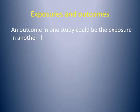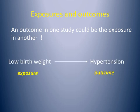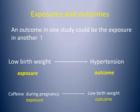It is also necessary to understand that an outcome in one case could be the exposure in another. For example, low birth weight could be associated with increased risk of hypertension. But we have seen in the previous example that low birth weight is considered an outcome of caffeine intake during pregnancy. So, low birth weight is an outcome in one case and an exposure in another case.